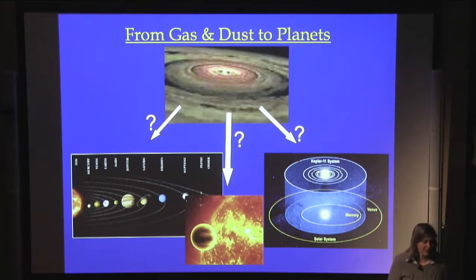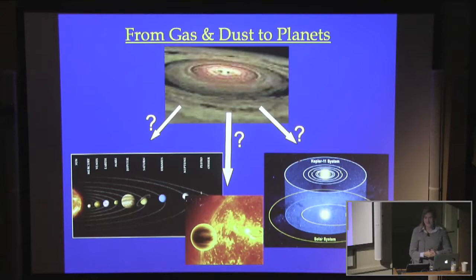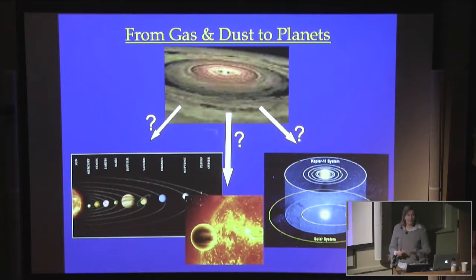If you don't provide a lot of observational constraints, you can come up with a lot of theories explaining how you could possibly get there, and some of them may be truly crazy. So we have to be a little bit inventive and try to see what are the constraints, and we have to try to use those to really learn something about the planet formation process.